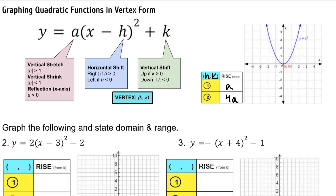Graphing quadratic functions in vertex form looks a lot like absolute value, just with parentheses and a squared. Your vertical stretch, shrink, or reflection over the x-axis is determined by a — its sign, or whether it's greater than or less than 1. Your horizontal shift is determined by what is being subtracted from x. Your vertical shift is determined by what is being added to the overall function.